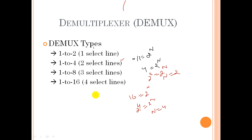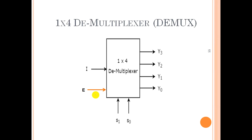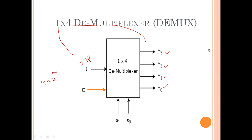Now let's design a one-to-four demultiplexer. This has a single input — that is the definition of demux: one input and many outputs — and the outputs are Y0, Y1, Y2, Y3. The number of select lines: since 2^n = 4, n equals two. So there are two select lines, S0 and S1, which decide at which output the input will be terminated or connected.